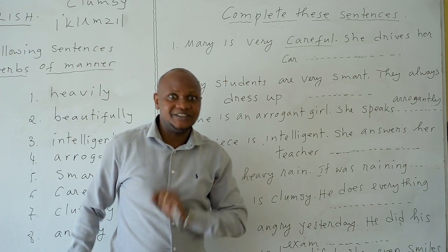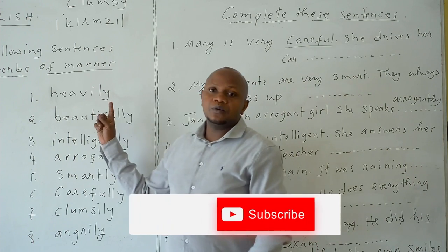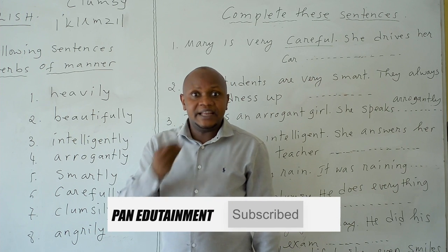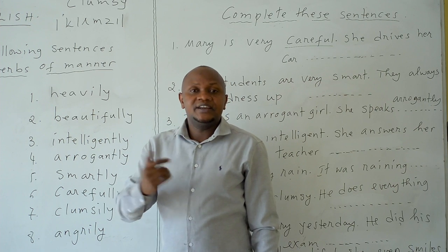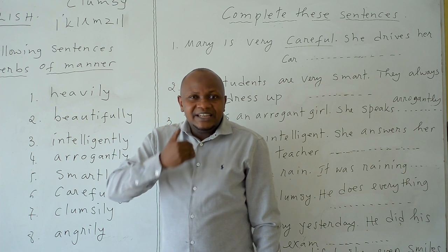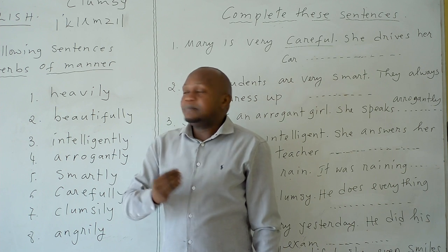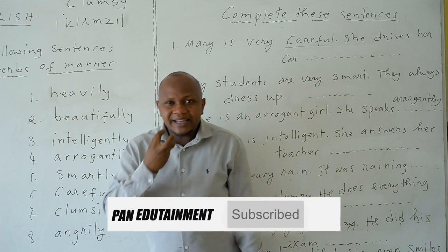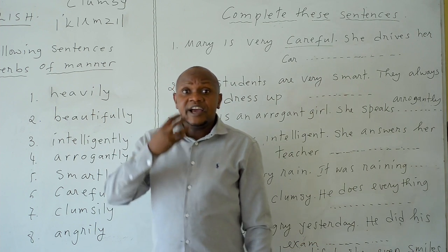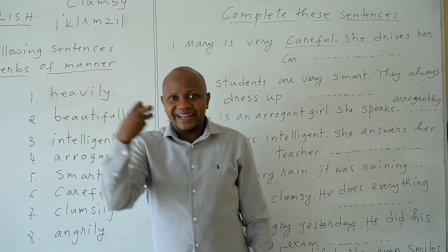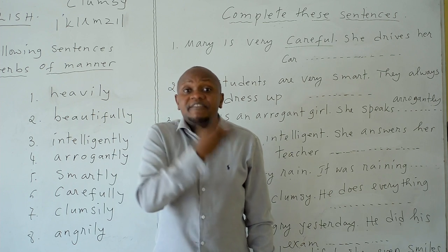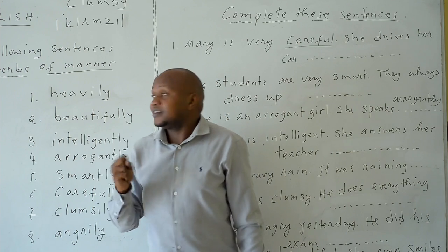First of all, we are going to explain the meanings. Heavily — for example: 'It is raining heavily.' Heavily means very strongly or intensely. Beautifully means in a beautiful way. Intelligently means in a clever or smart way.